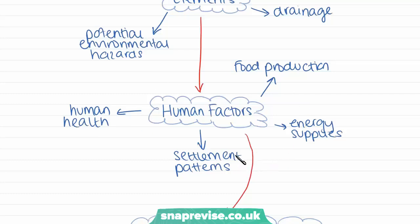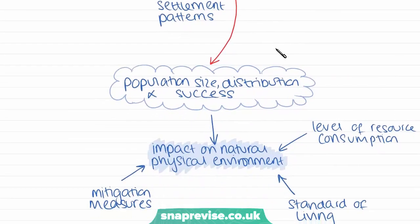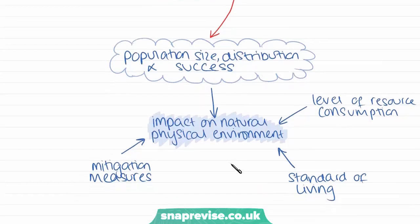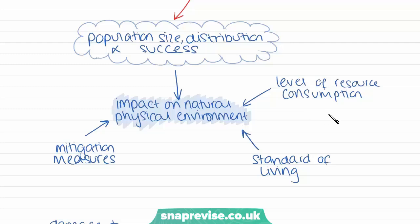This gives a brief overview of how physical factors influence human life and influence where humans choose to live in the world. These human factors then go on to influence the population size, distribution and success of the population in different areas. When humans live on the land, this can also have negative physical impacts on the environment — it's almost like a chain — and this relates to levels of resource consumption.